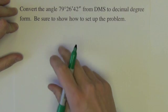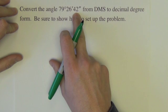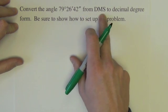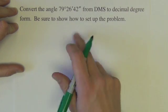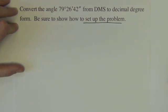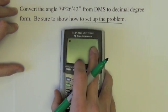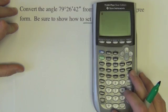Next question asks us to convert the angle 79 degrees, 26 minutes, 42 seconds from DMS to decimal degree form. And be sure how to set up the problem. The reason why I'm asking you to do this and to show your work is because I don't want it done just solely on the calculator.